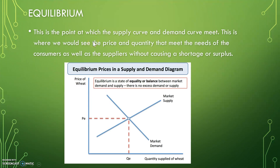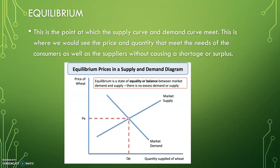We briefly talked about equilibrium. This is the point at which the supply curve and demand curve meet — where we see the price and quantity that meet the needs of consumers as well as suppliers without causing a shortage or a surplus. The supply curve slopes upward because as price goes up, quantity goes up as well. With demand, that is an inverse relationship: as the price goes up, the demand goes down.